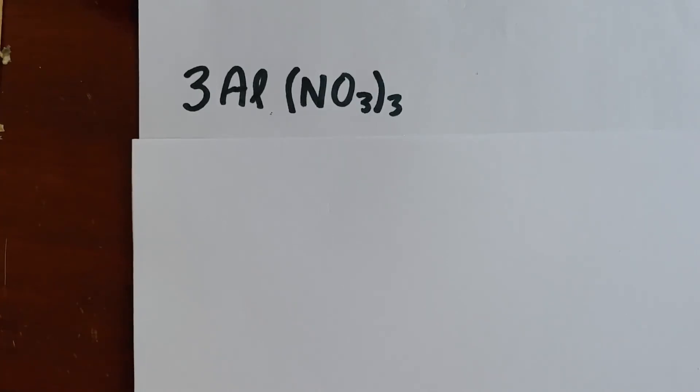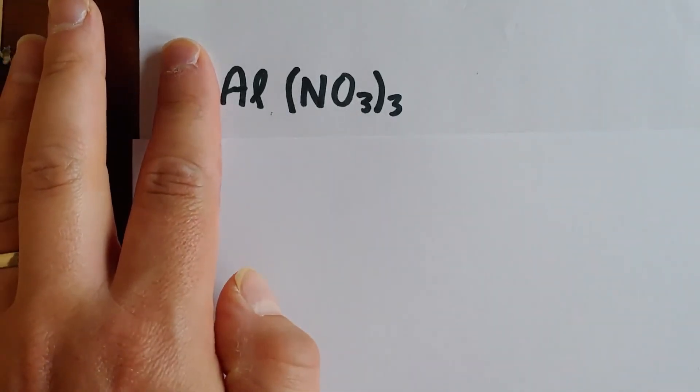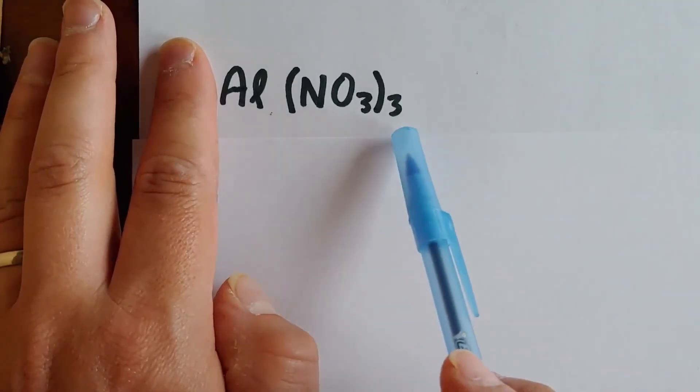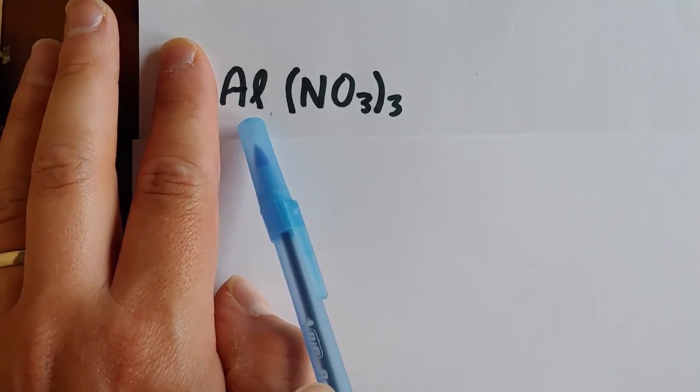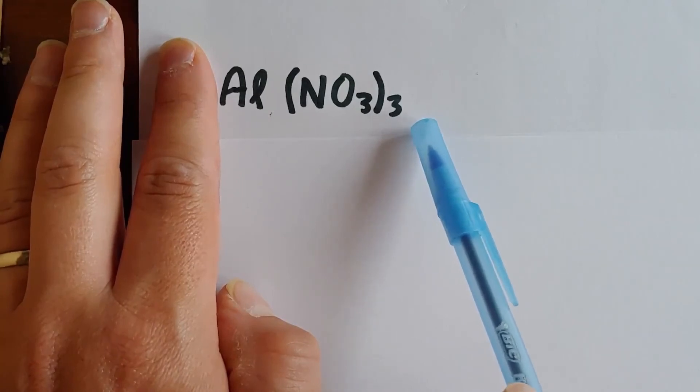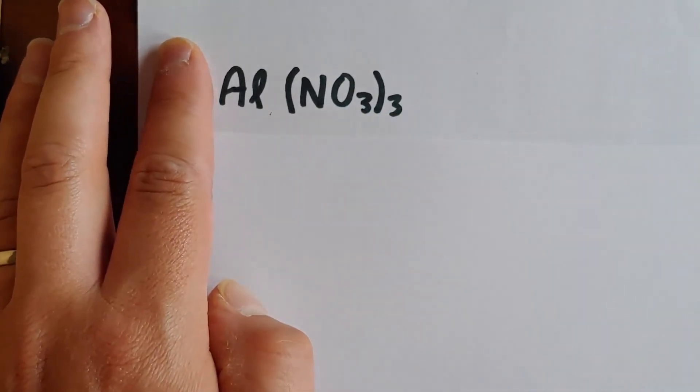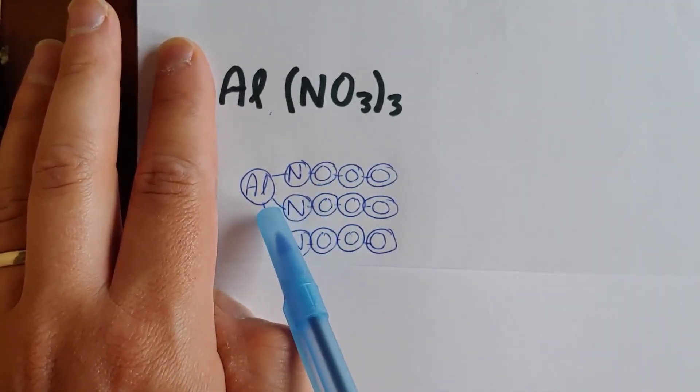All righty. Well, let's give it a shot. So I'm going to cover the coefficient with my hand and say, let's just see the molecule we have to draw. Al(NO3)3. So let's see. We've got one aluminum atom in this molecule. And then we have three polyatomic ions. Each polyatomic ion has a nitrogen and three oxygens together with it.